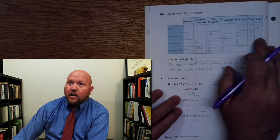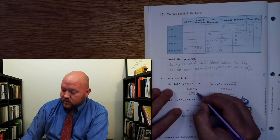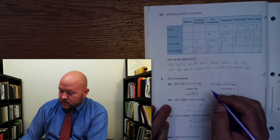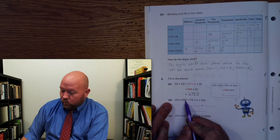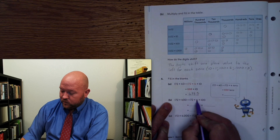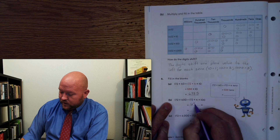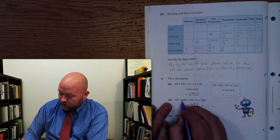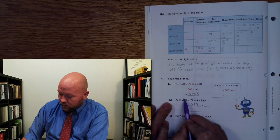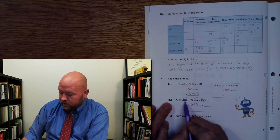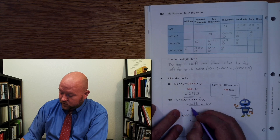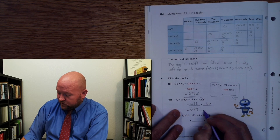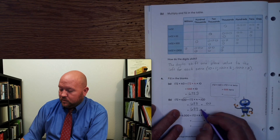Unlike in the place value chart where I leave it empty, here I need a place value holder — so I use a zero. Now here we have 172 times 400. We've broken 400 into 4 and 100, because 4 times 100 equals 400. So 172 times 4 equals 688, and now we're going to multiply by 100, shifting the place value over 2. That gives us 688 with two place values that are empty — so we put zeros there.